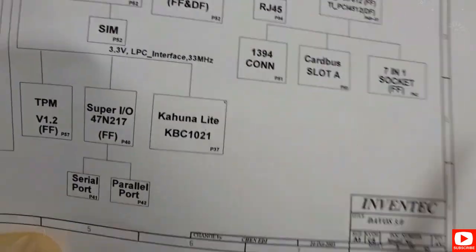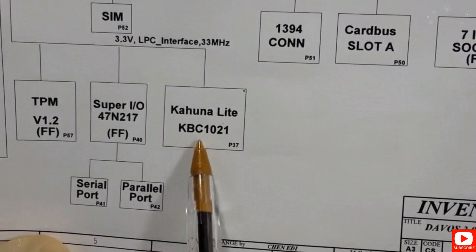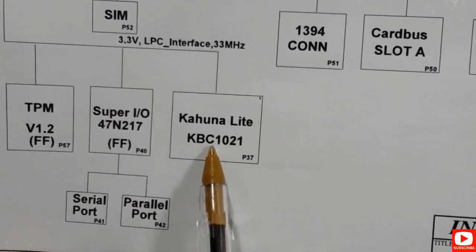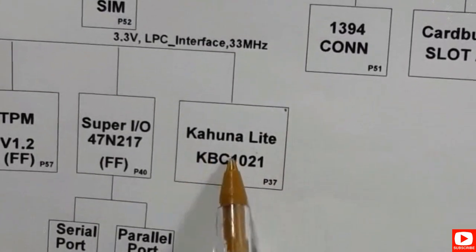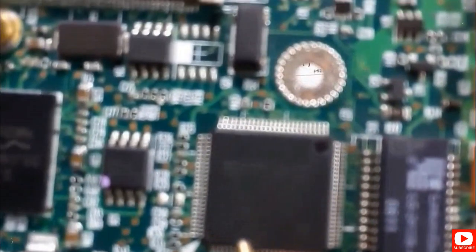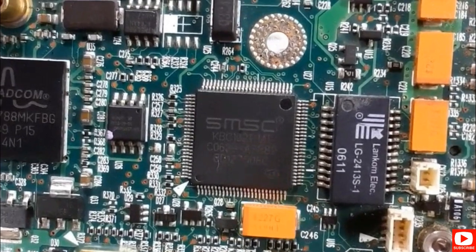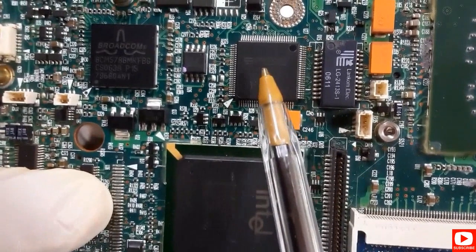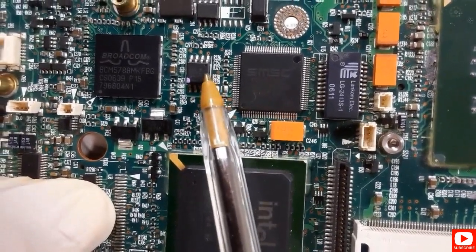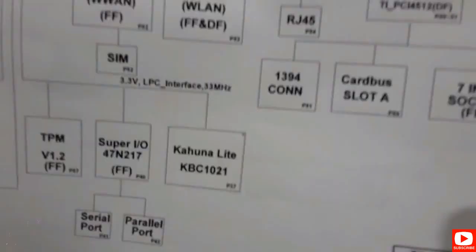Let's check another IC to go deeper into understanding schematic reading. Here we have the keyboard controller, KBC 1021. This is the control for the keyboard. Let's check the motherboard to see the reference — the same reference as we have seen in the schematic. This IC is always found near the BIOS and the chipset or storage.